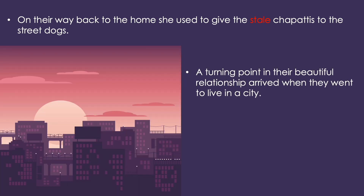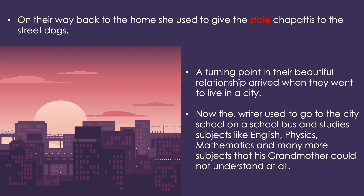A turning point in their beautiful relationship arrived when they went to live in a city. Unki beautiful relationship mein turning point tab aaya jab woh village se shahar mein rehne ke liye gayi. Now the writer used to go to the city school on a school bus and study subjects like English, Physics, Mathematics, and many more subjects that his grandmother could not understand at all.